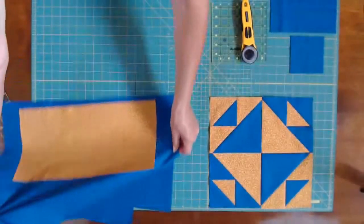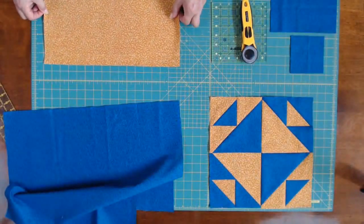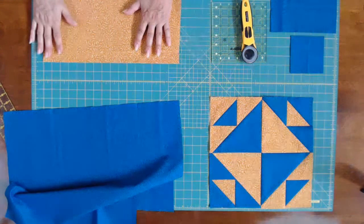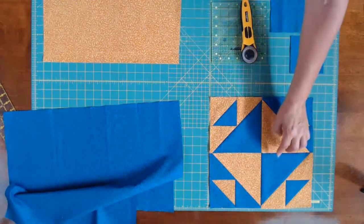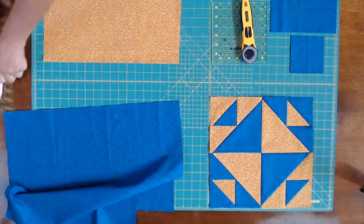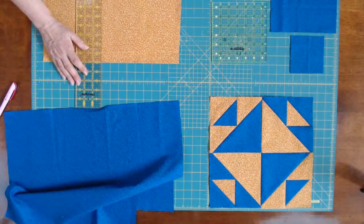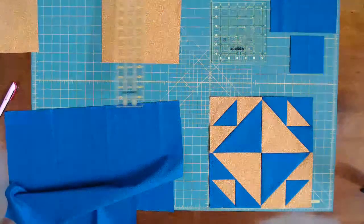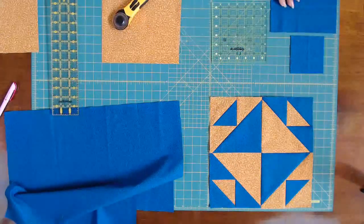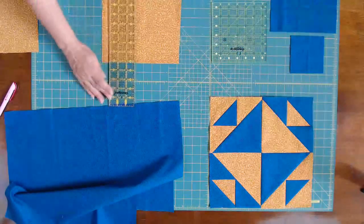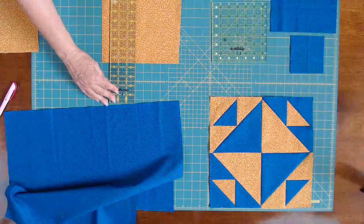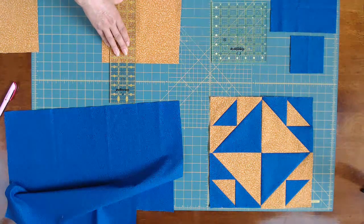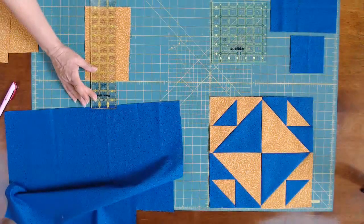So let me cut this for you and we'll make this block. Now this is the last little bit I have of this gold. This is the last of it so I'm going to be using it all up. So this requires two seven inch squares, one of the blue and one of the gold. So I'm going to cut a seven inch square first and then it requires two four by eight rectangles. So I'm going to cut two of those.